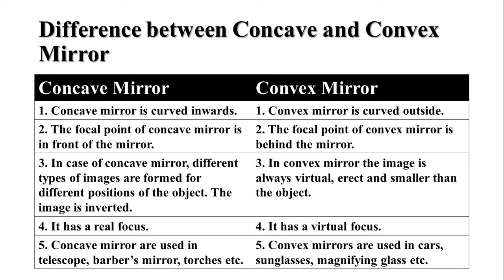Fourth, the concave mirror has a real focus while the convex mirror has a virtual focus. And fifth, concave mirrors are used in telescopes, barber's mirrors, and torches, while convex mirrors are used in cars, sunglasses, magnifying glasses, etc.